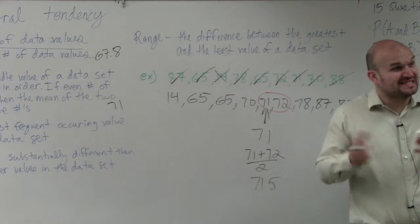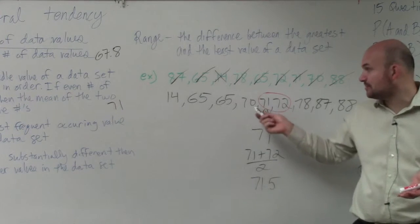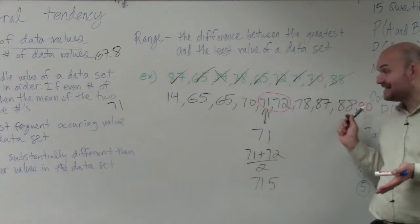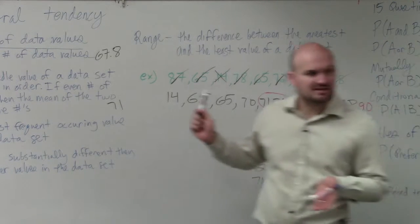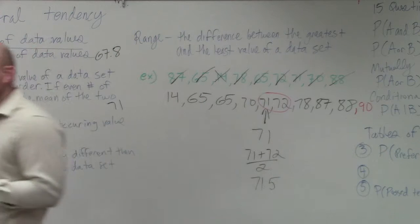Does everybody understand? So if it's odd, it's easy - it's just that middle number. However, if I add an extra number, you've got to find the mean of the two middle values. Does that make sense? Anybody have any questions on that? No. OK.